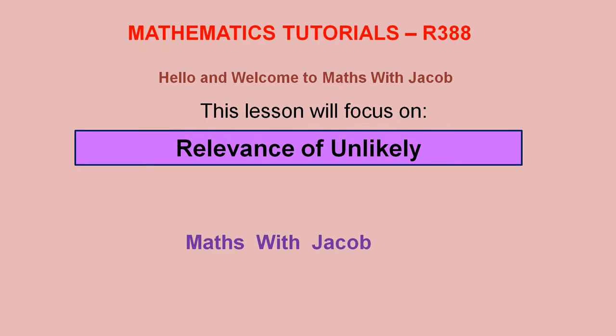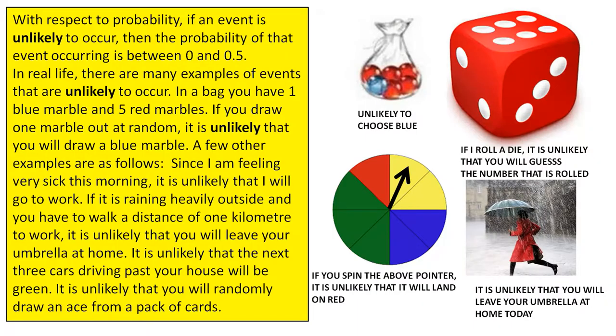Hello and welcome to Maths with Jacob. This lesson will focus on relevance of unlikely. With respect to probability, if an event is unlikely to occur, then the probability of that event occurring is between 0 and 0.5.